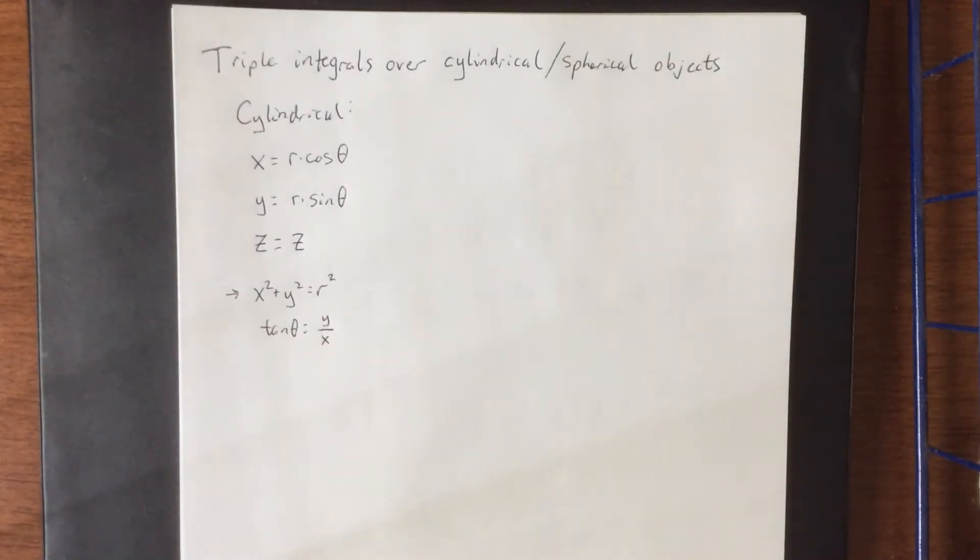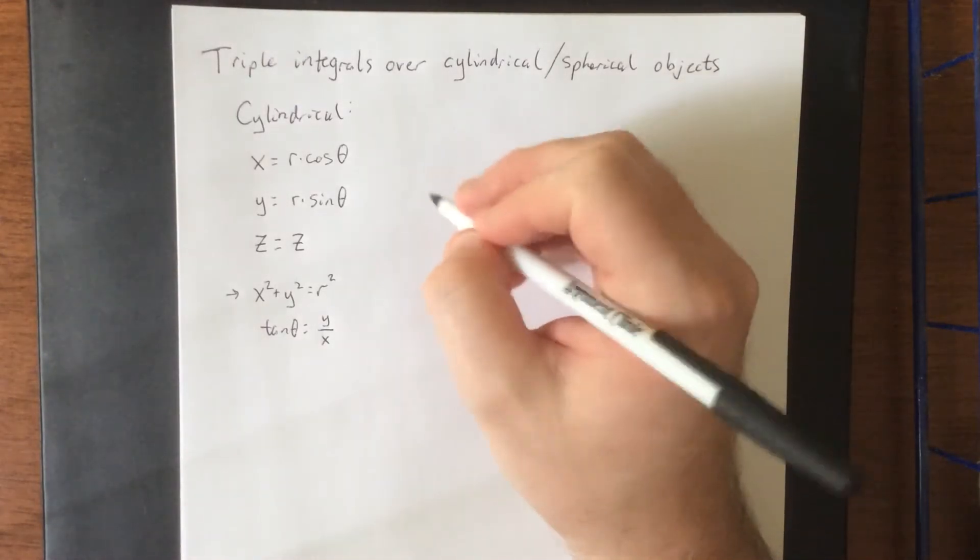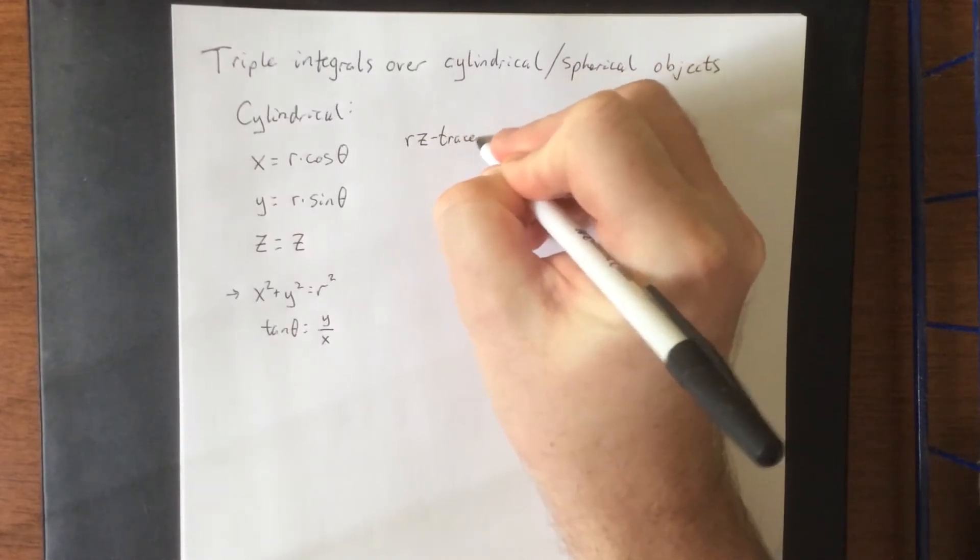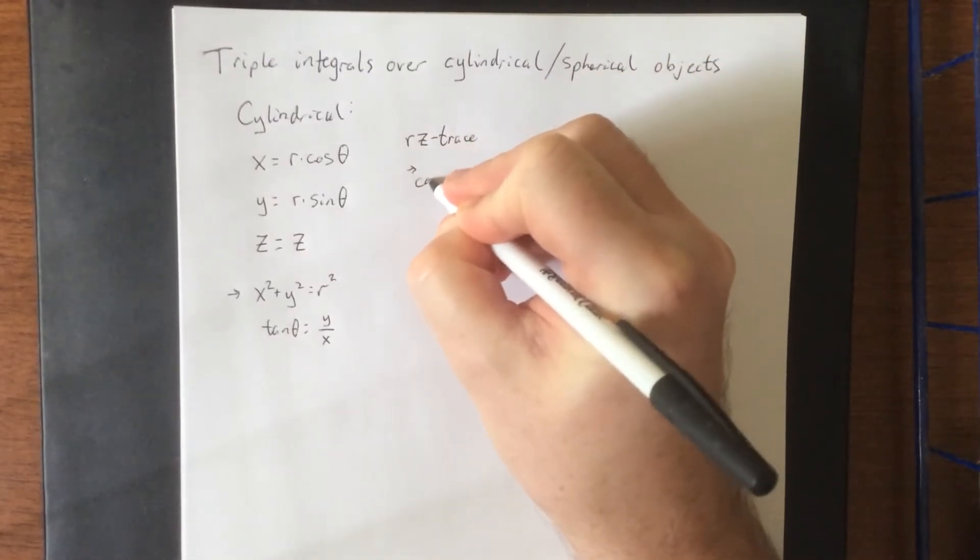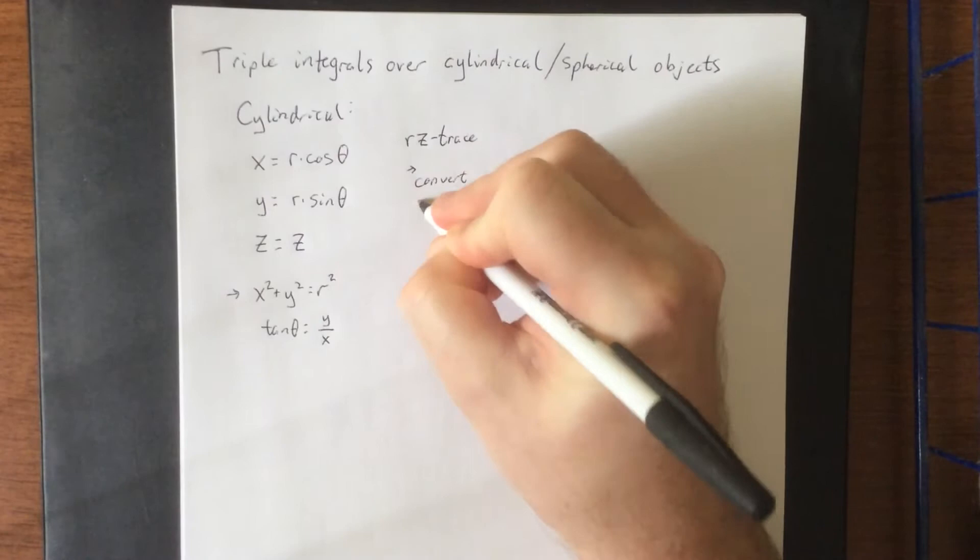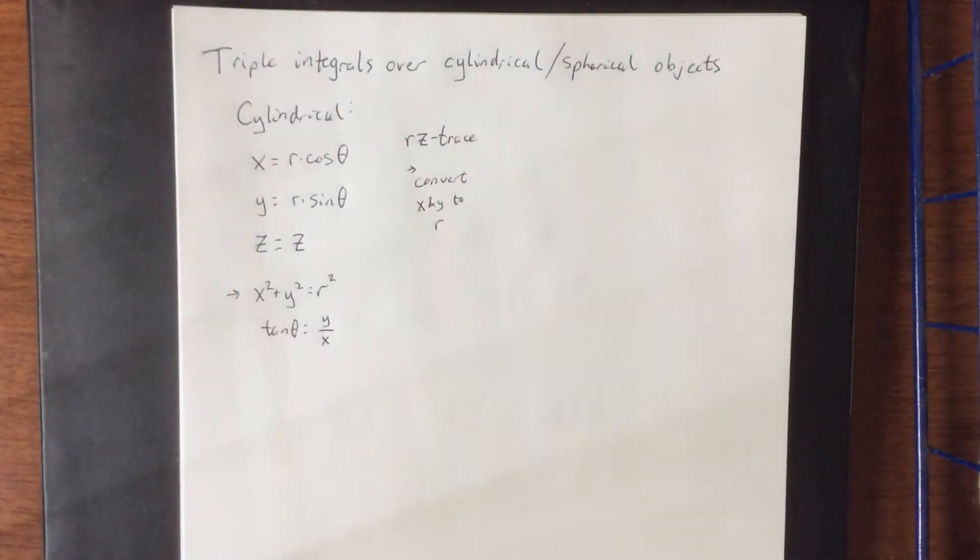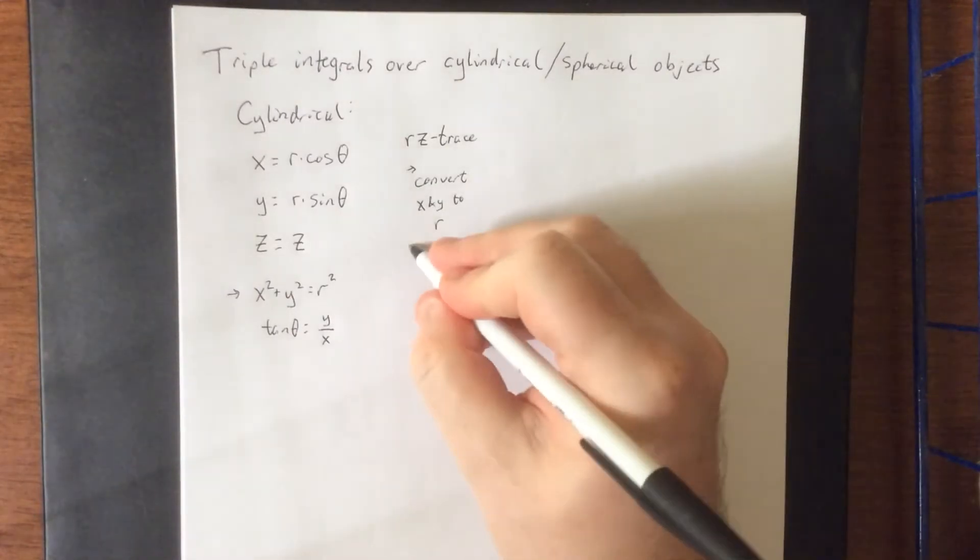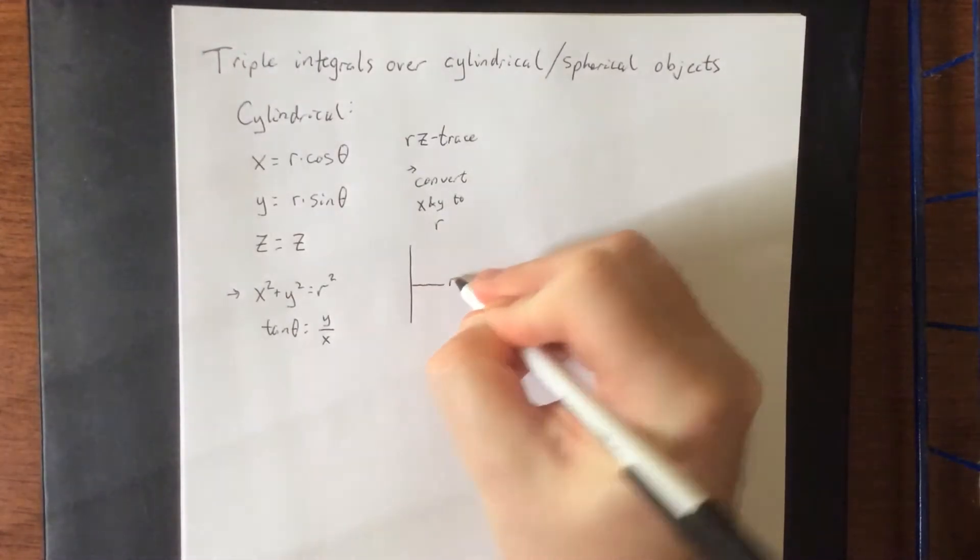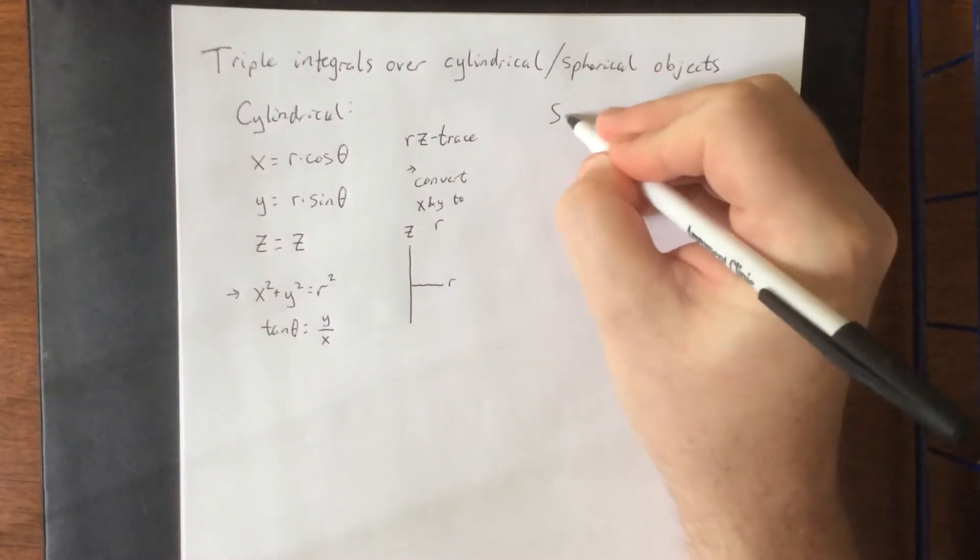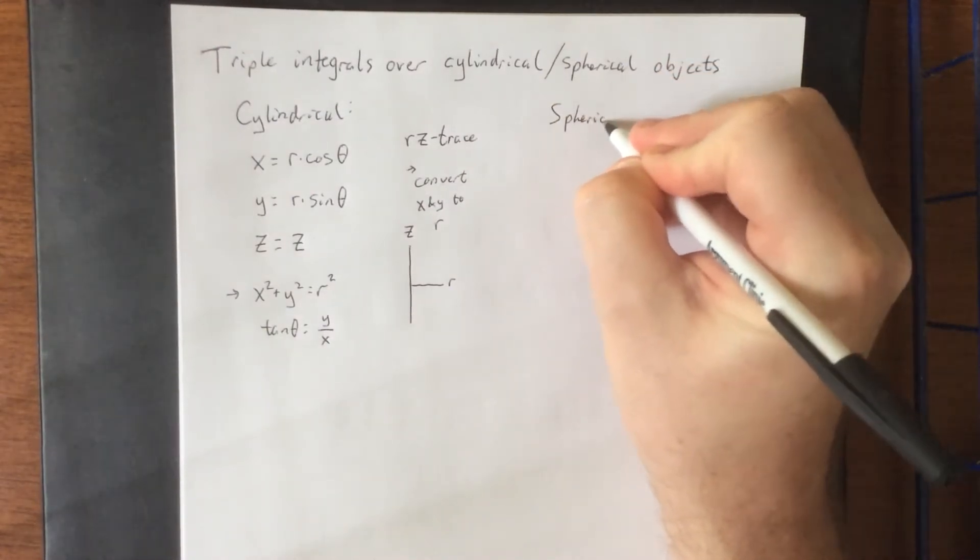Now in the event that the object that you get in cylindrical coordinates is still round or circular with respect to the Rz trace, the Rz trace is what we get by saying let's convert x and y to r. If what you have at that point is still circular in nature what you might do is consider taking r and z and converting into spherical coordinates.